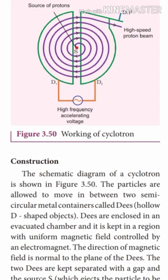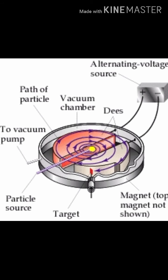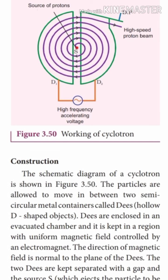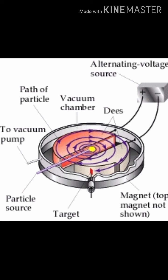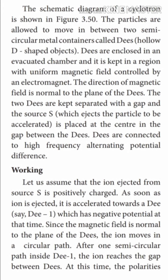The particles are allowed to move in between two semicircular metallic containers called Ds. The Ds are enclosed in an evacuated chamber, kept in a region with a uniform magnetic field controlled by an electromagnet. The direction of the magnetic field is normal to the plane of the disk.